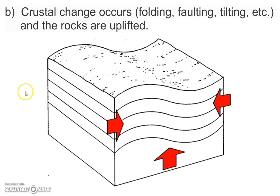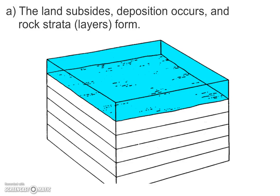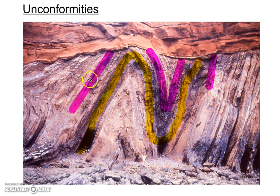Then some sort of crustal change would have happened. Maybe plates collided, and so you have pressure squeezing in, which caused either folding, or faulting, or tilting. Something happened, and these rocks got uplifted — they got pushed up out of the water. That's what caused the folding in the picture we looked at.